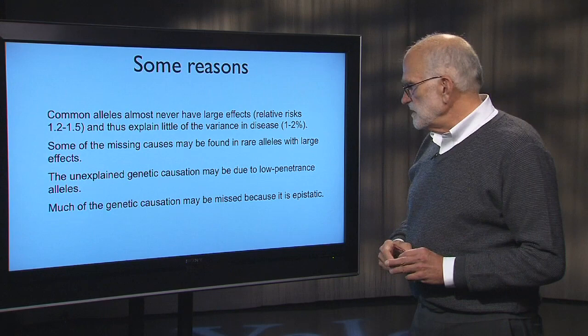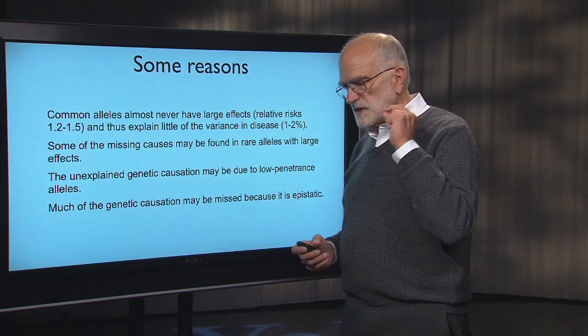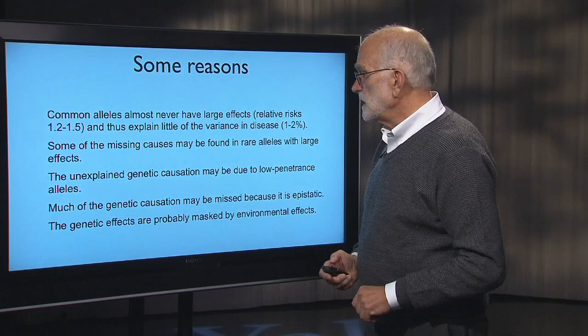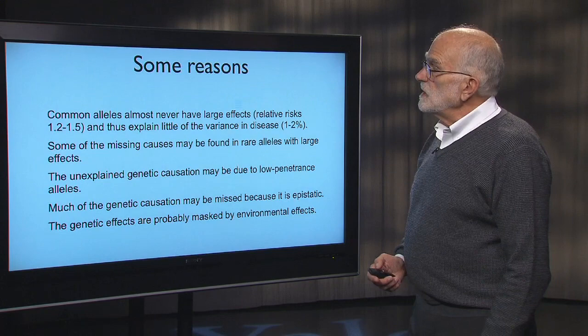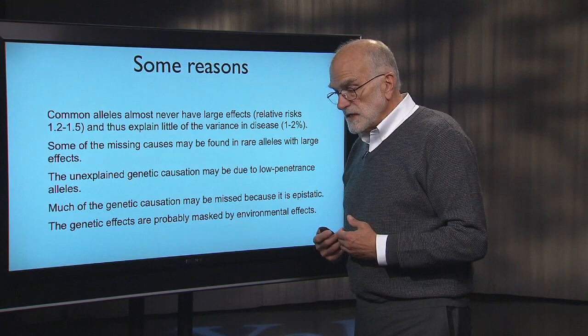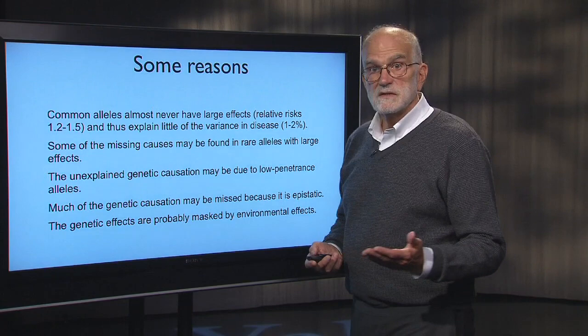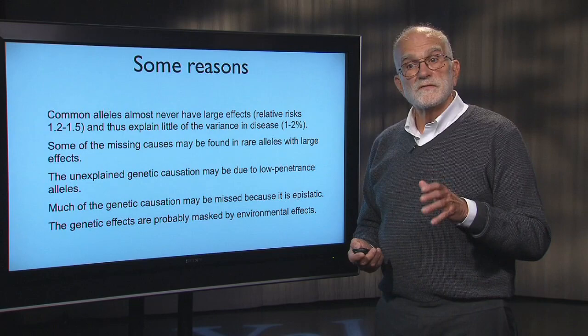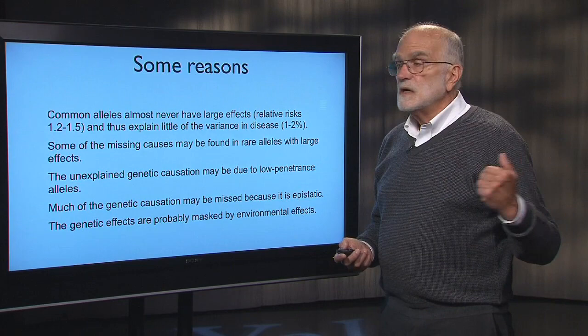Much of the genetic causation might also be missed because it is epistatic — meaning a particular variant only has an effect in combination with some other variant, requiring detection of combinations rather than single gene variation. Additionally, genetic effects are probably masked by environmental effects. This means that the Human Genome Project, which was supposed to give us the Book of Life and tell us so much about susceptibility to disease, turned out to be disappointing in that respect. It gave us useful information and tremendous tools, but one of the central arguments that sold the project 15 to 20 years ago turned out to be wrong.